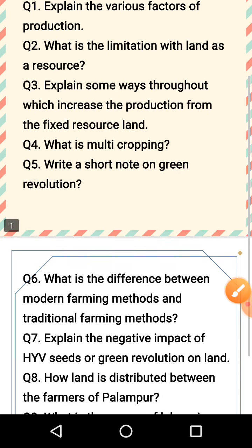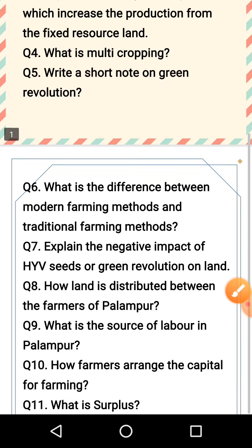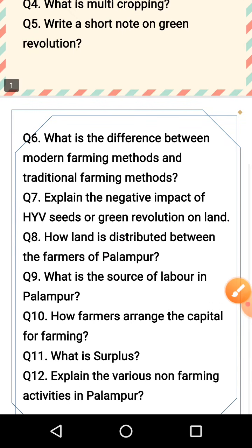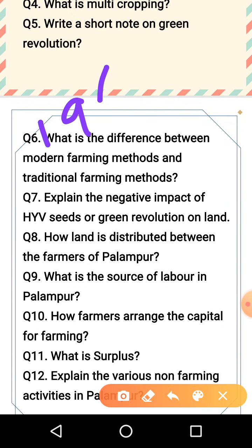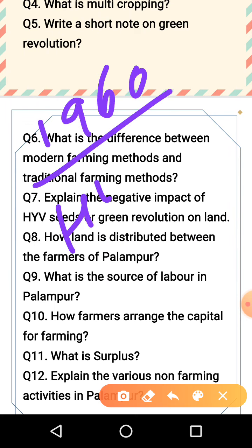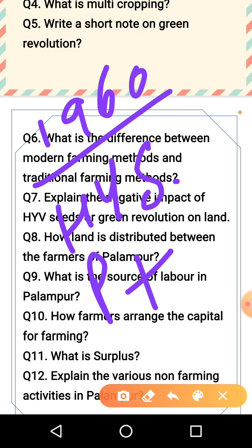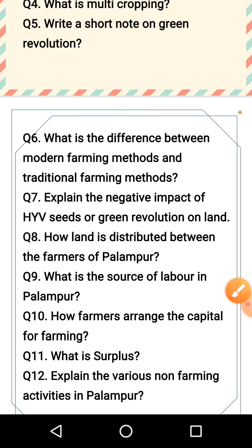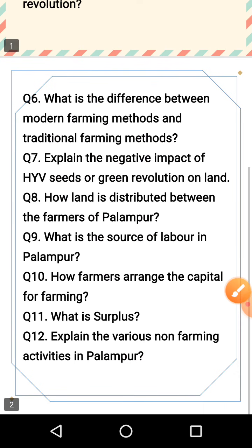Next: write a short note on the Green Revolution. The Green Revolution came in 1960. In it, HYV seeds were used to increase production.